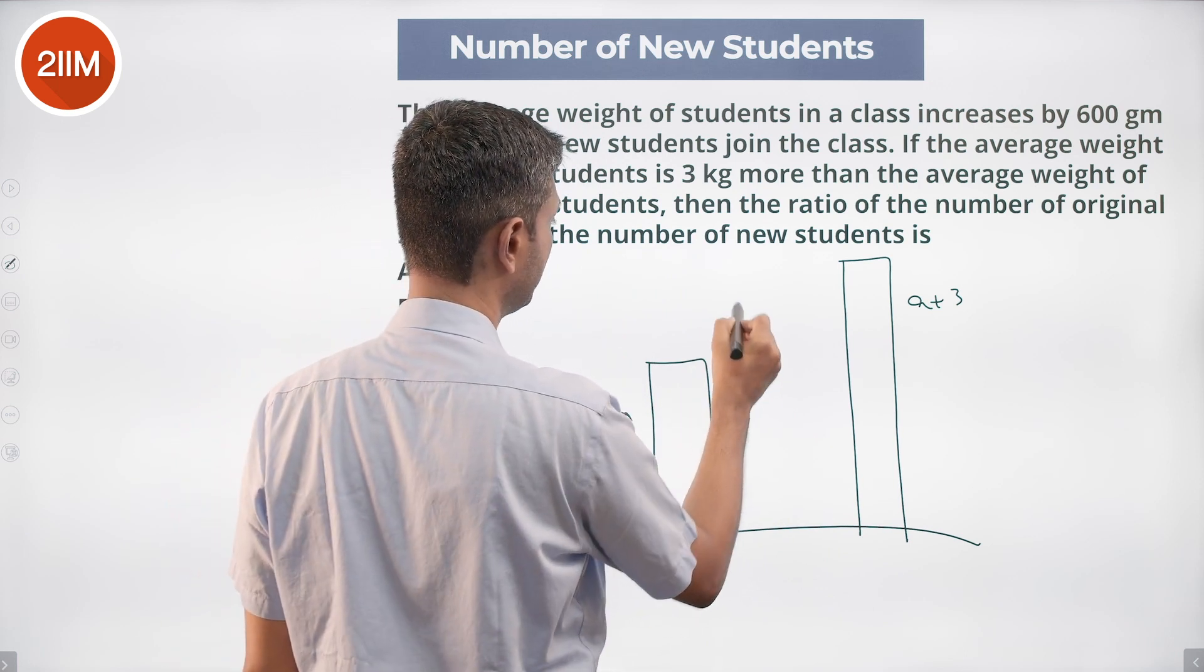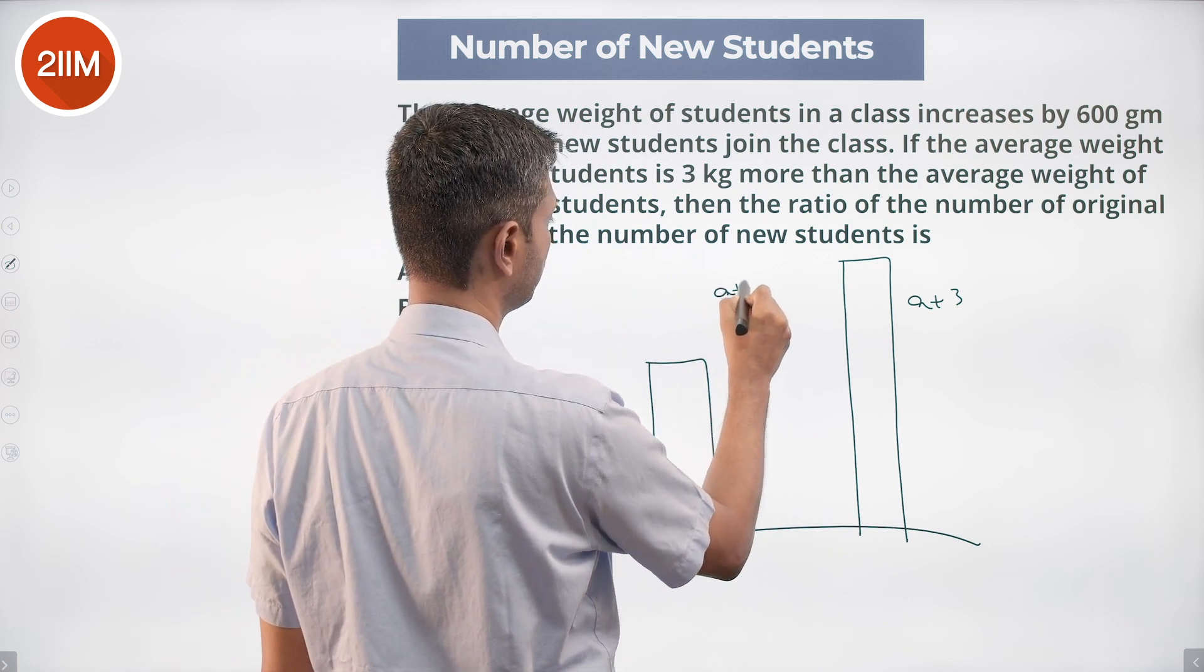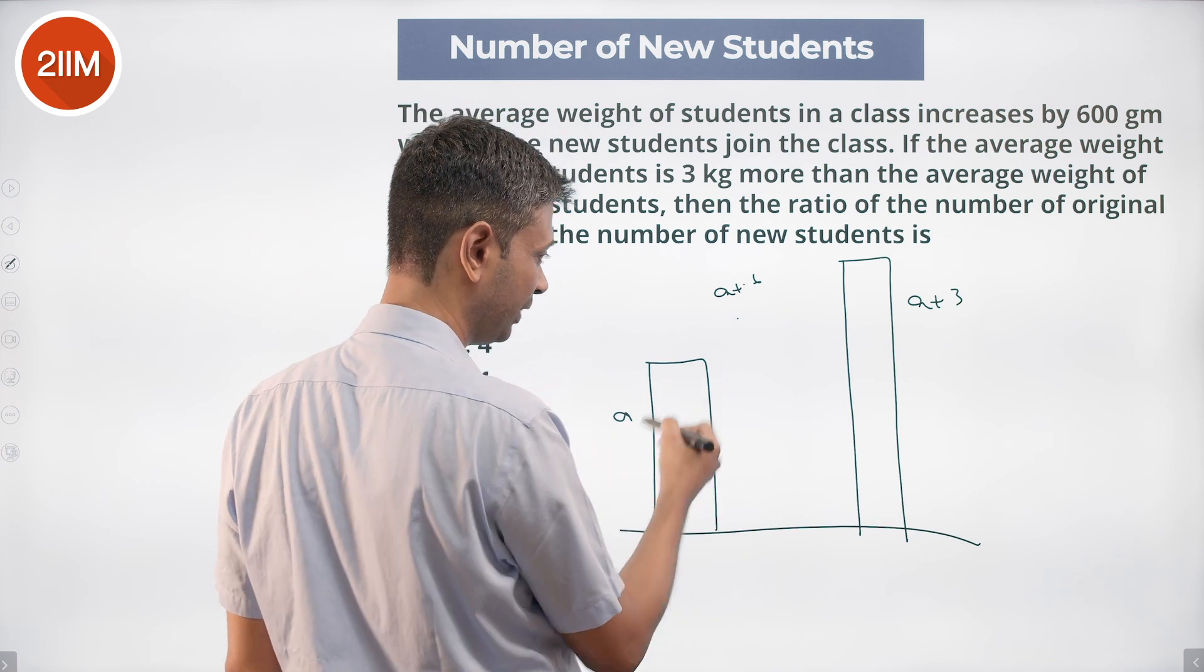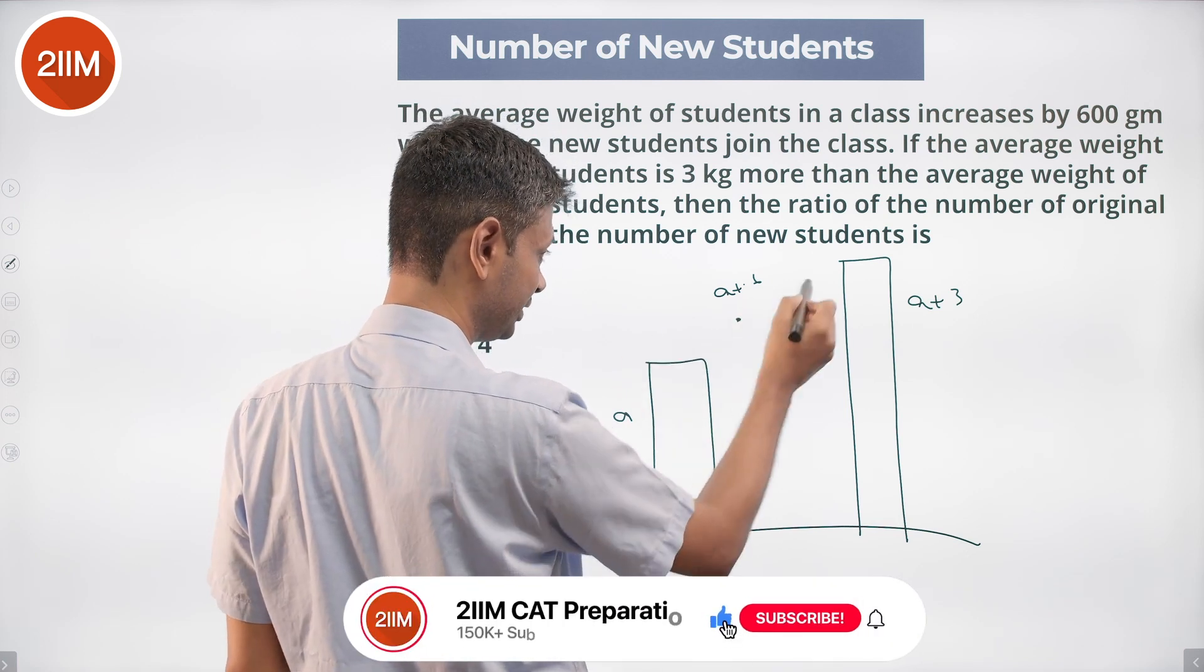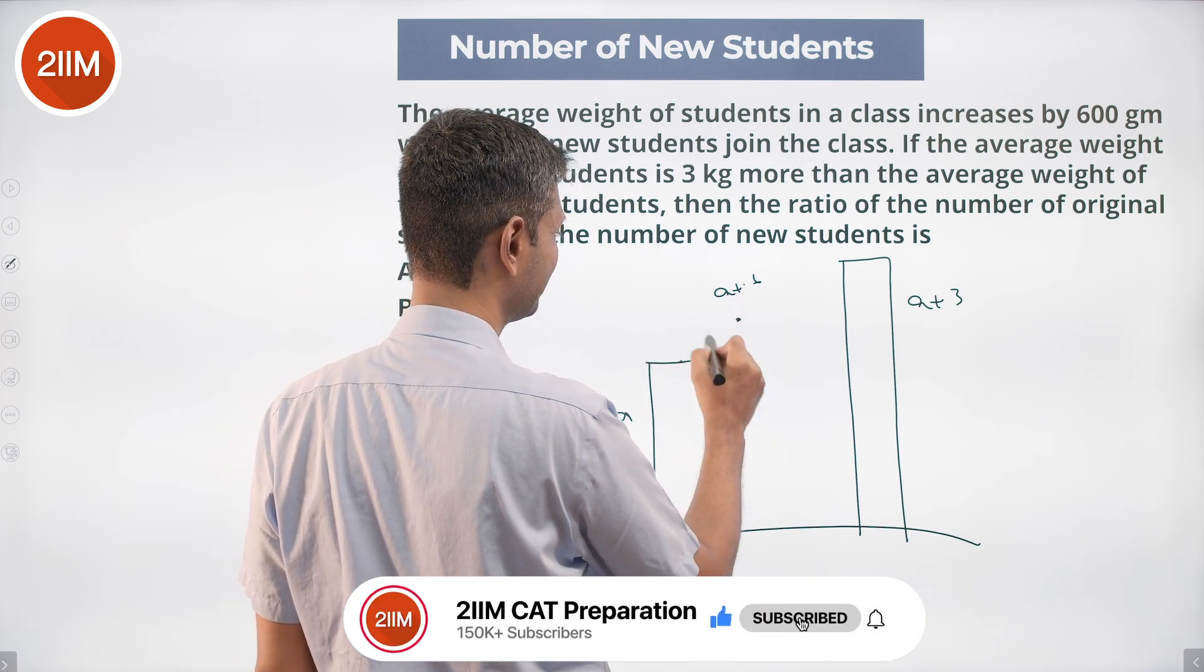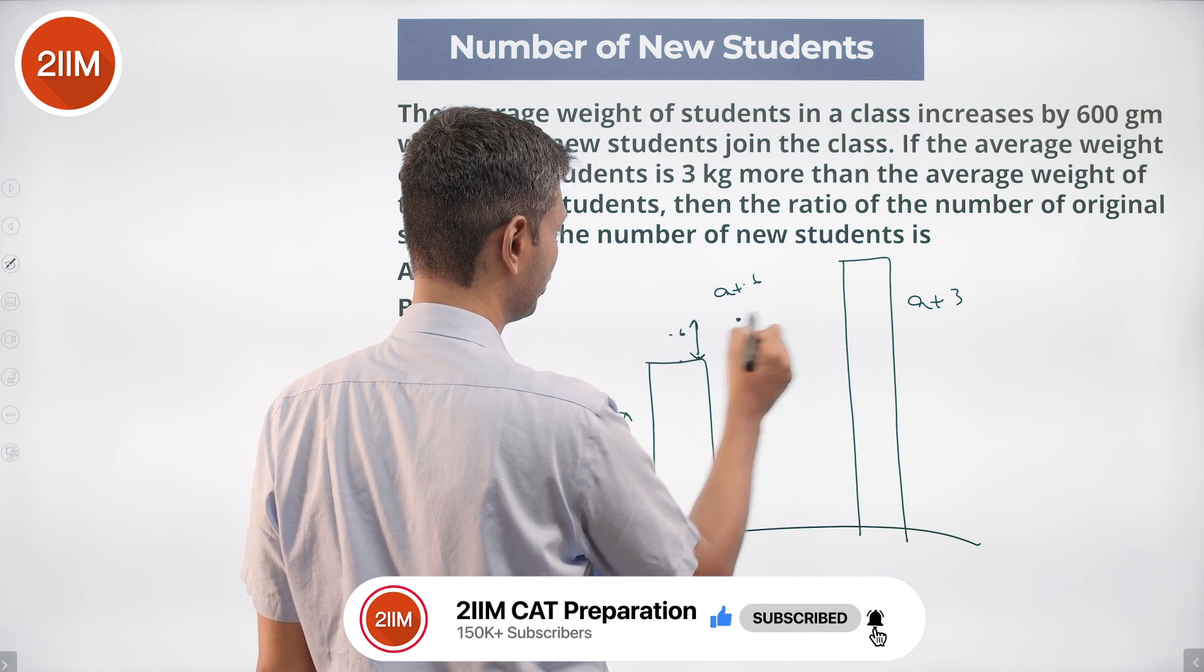The weighted average now becomes a plus 0.6. The weighted average is closer to this than that. This difference is 0.6, this difference is...